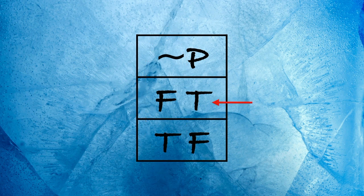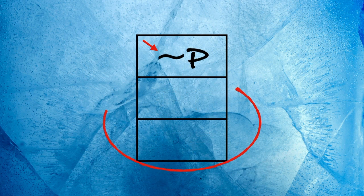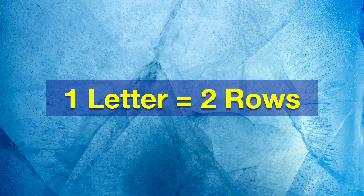In this case, it's true that the polar bear hunts on ice. So it's false to say the polar bear does not hunt on ice. But we're focusing on table construction. So the real lesson here is that the negation operator did not require a new row. So what we've seen is one letter, two rows.